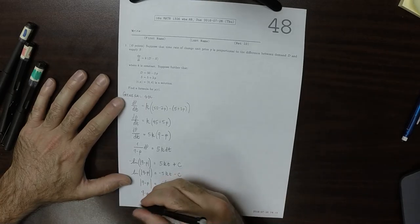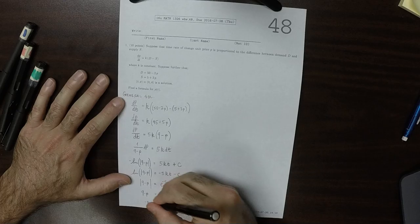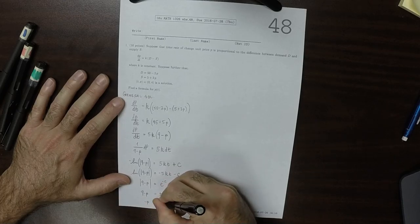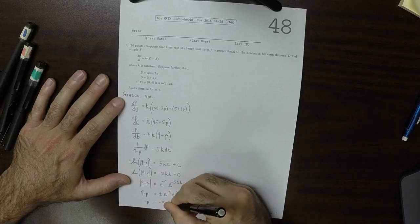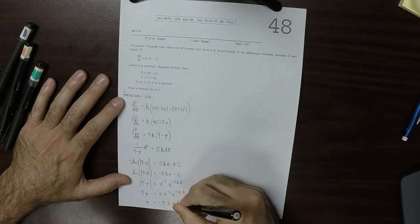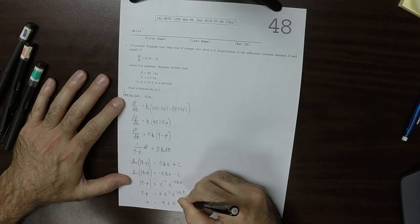And then subtract 9, negative p is negative 9 plus or minus exponential negative c, exponential negative 5kt.